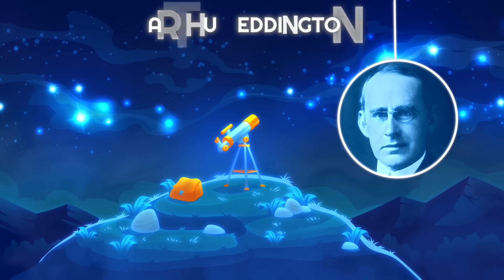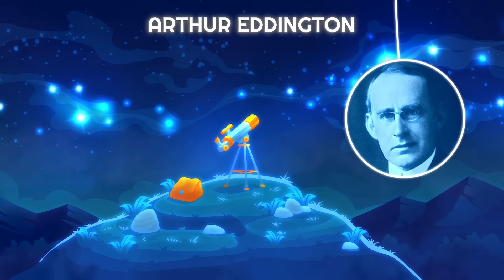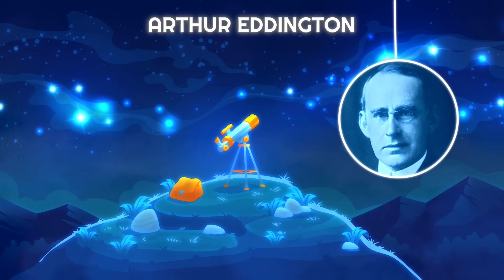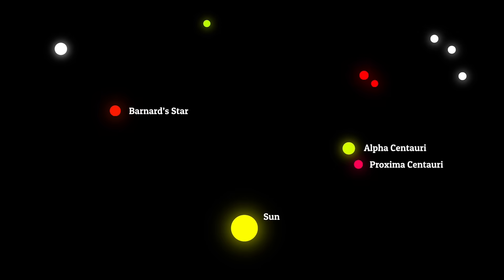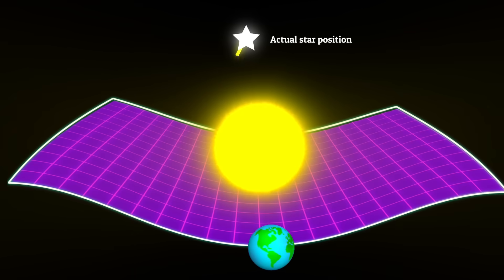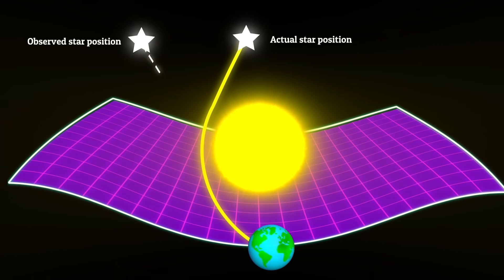Then four years later, Arthur Eddington, the greatest astronomer at the time from England, set out with his team to experiment with this. At that time, they knew the exact location of some of the stars, and if Einstein's theory was correct, the star behind the sun should be visible somewhere else, because the light should bend and be visible to our eyes.